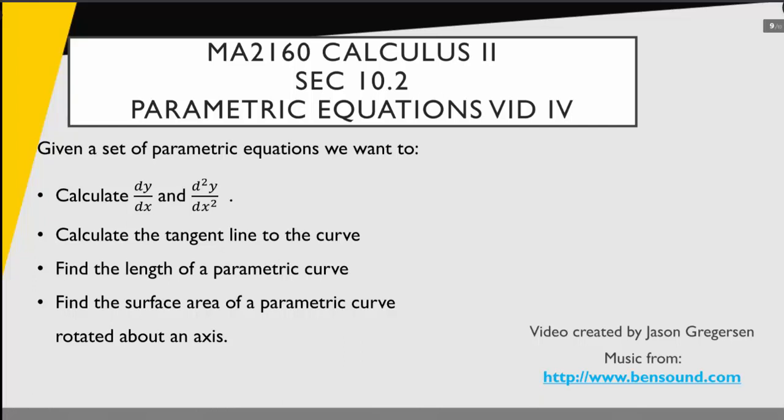Hello everyone and welcome to the next video in your Calculus 2 video set. We're finishing up section 10.2 now and looking at the last goal: how to find the surface area of a parametric curve that's rotated about an axis. This is going to be very similar to what we've done before, so let's jump into an example right away.